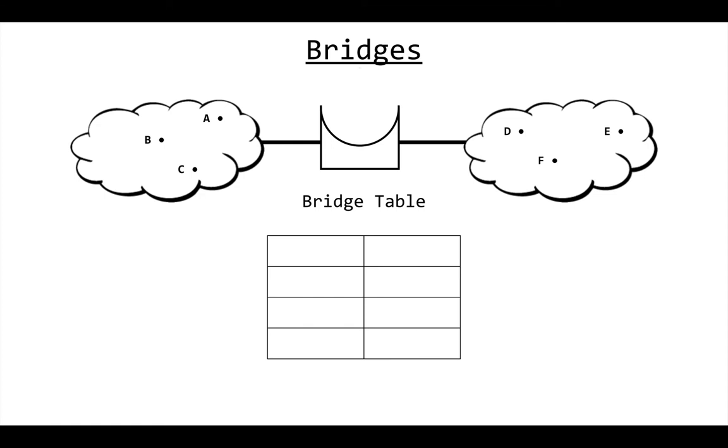Next thing we're going to talk about is bridges. The main function or purpose of a bridge is to connect two different networks. When we have a picture of a network cloud like we have two of them here, that basically means there's some computer networking stuff in there. In this case, I have three computers on the left cloud and three in the right cloud.